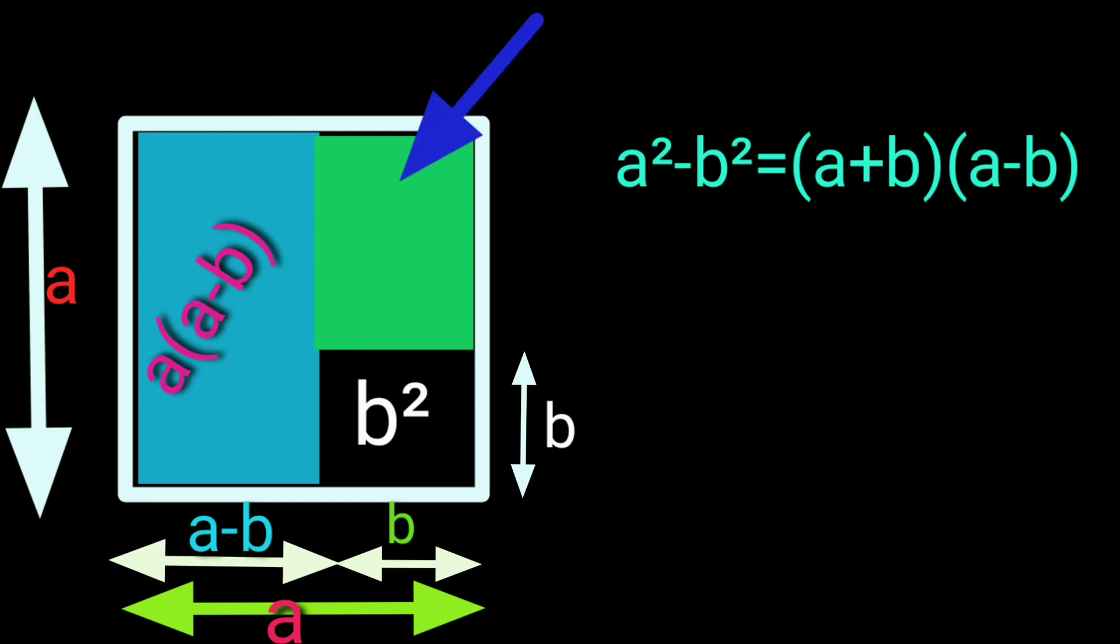Now move to the second portion. Its length is a - b units, as the total length is a units and we subtracted b units from that. We get a - b units and its breadth is b units.